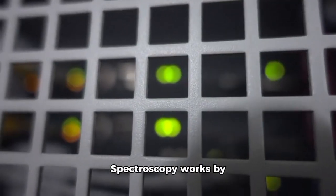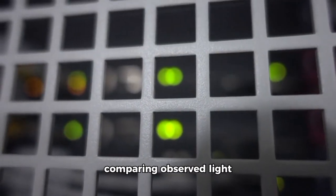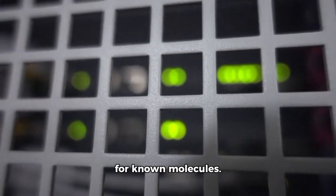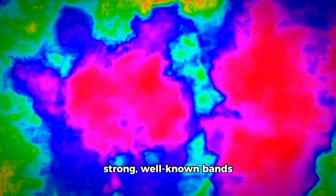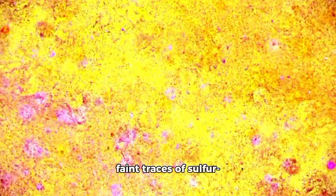Spectroscopy works by comparing observed light to laboratory fingerprints for known molecules. Carbon dioxide has strong, well-known bands in the infrared, which Webb captured clearly. Water also has bands visible in the near-infrared, but in these observations they were weaker. Observers also found smaller amounts of carbon monoxide and faint traces of sulfur-bearing molecules such as carbonyl sulfide.